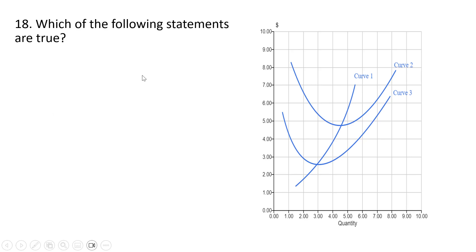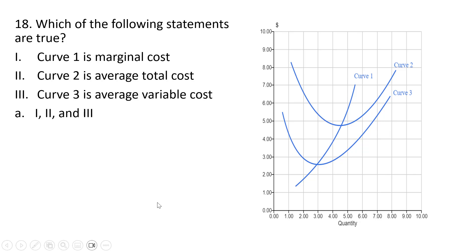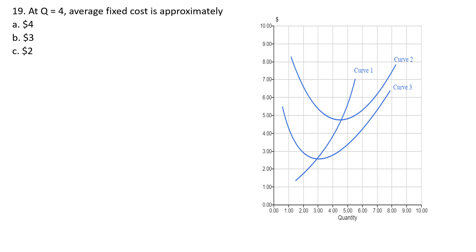Some graphical questions now. Which of the following statements are true? Curve 1 is marginal cost — correct. Curve 2 is average total cost — correct. Curve 3 is average variable cost — correct. And average total cost will always lie above average variable cost. So all these statements are correct, answer choice A. For another graphical question: at q equals 4, average fixed cost is approximately the difference between average total cost, curve 2, and average variable cost, curve 3 — which looks like about a $2 difference. The correct answer is C.